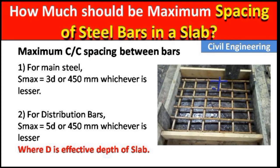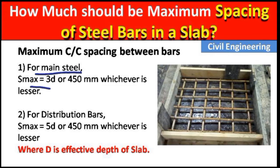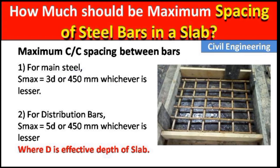This is center-to-center spacing. If we are talking about main steel rods and distribution bars, there are different spacings. For main steel rods, we have to provide a maximum spacing of 3d or 450 mm, whichever is lesser, where d is the effective depth of the slab.